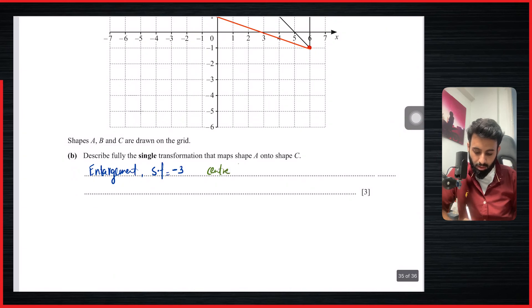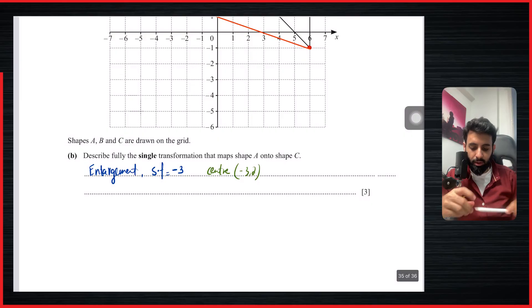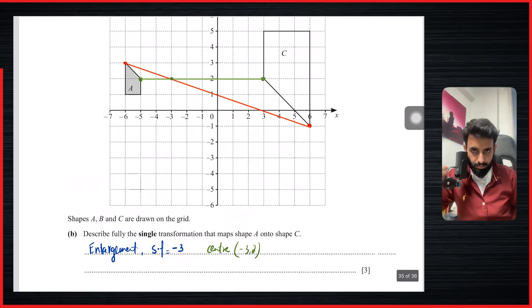That's the center and the center has coordinates, the center has coordinates minus three comma two. So center minus three comma two. And like I said, you can actually see that this is a three mark question. So now it makes sense to you hopefully why it's a three mark question: one mark for writing down the transformation, one mark for the scale factor, and one mark for the center.